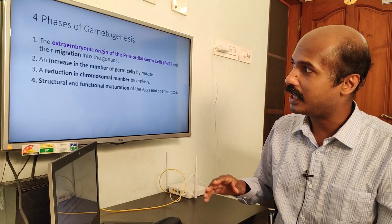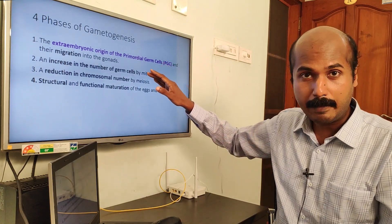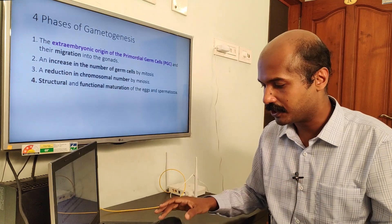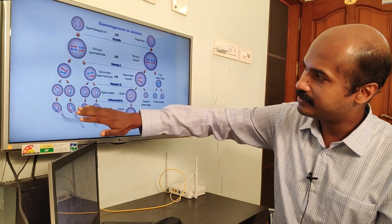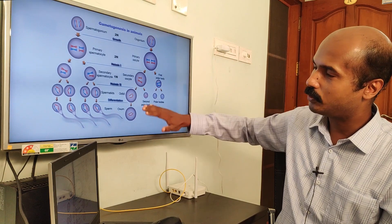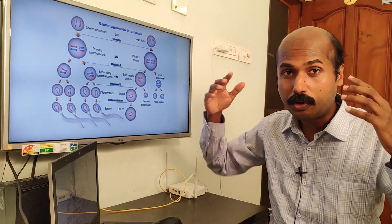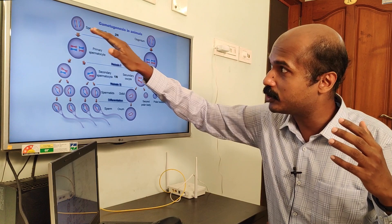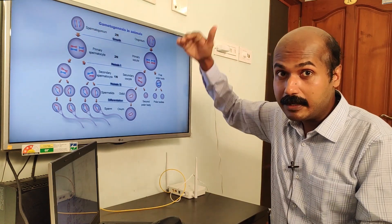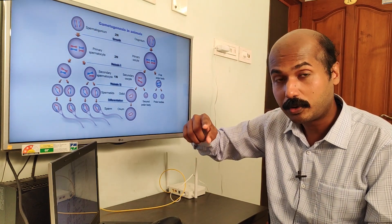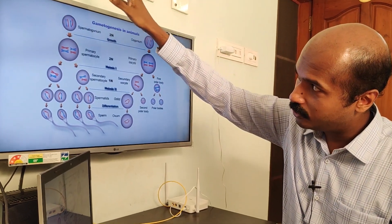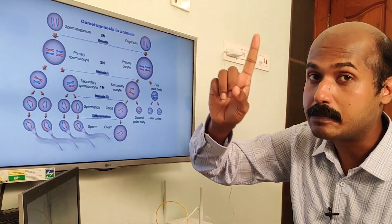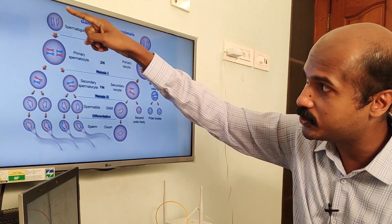So the four phases of gametogenesis are: migration, mitosis, meiosis, and structural and functional maturation. Looking at a diagram showing gametogenesis in animals generally — the left side shows the male and the right the female. Spermatogonium and oogonium are in turn developed from primordial germ cells when the parents were embryos.